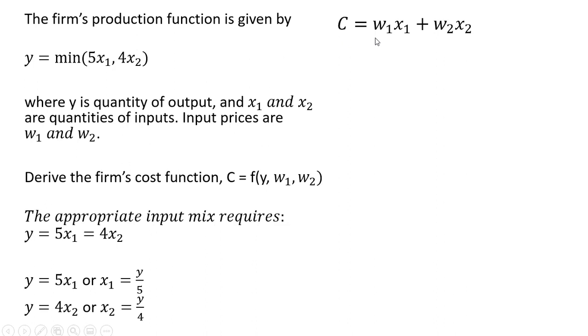Next step is we form our ISO cost line, where cost equals the price of input 1 times input 1 plus the price of input 2 times input 2. And for input 1 and input 2, we're going to make some substitutions now from down here. For X subscript 1...